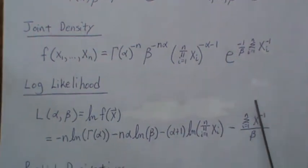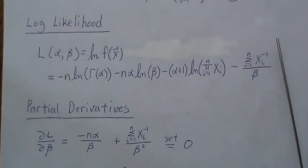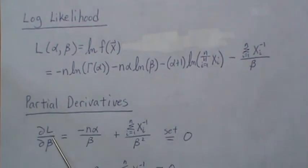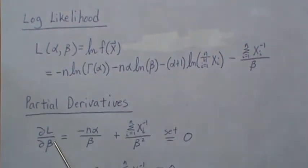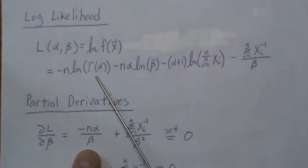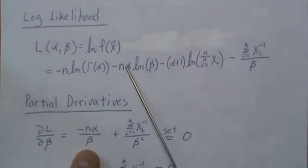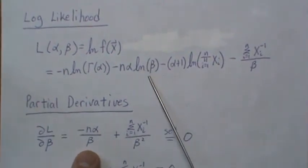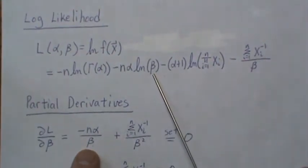Now we take the partial derivatives of our log likelihood to find the maximum likelihood estimate. So we take the partial of L with respect to beta, no beta here so it's constant, that's a constant so it's there, the derivative of a log of beta is just 1 over beta.